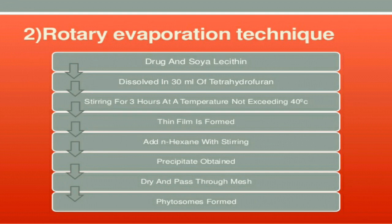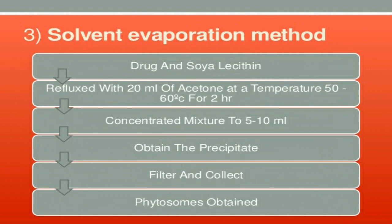In the rotary evaporation technique, the process is similar: drug plus phosphatidylcholine, such as soya lecithin, is dissolved in tetrahydrofuran, then stirred. A thin film is formed, then hexane is added, causing phytosomes to precipitate out, which are separated by drying and filtration. In the solvent evaporation technique, the hexane step is excluded. Drug plus soya lecithin undergoes acetone extraction or reflux, then concentration, and then the precipitation is collected to obtain phytosomes.